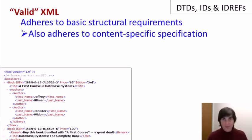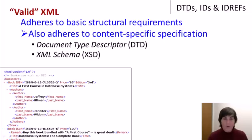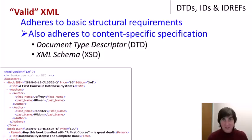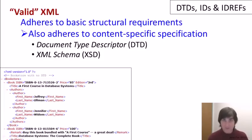We're going to learn two languages for those specifications. One of them is document type descriptors, or DTDs, and the other, a more powerful language, is XML schema. Specifications in XML schema are known as XSDs, for XML schema descriptions.